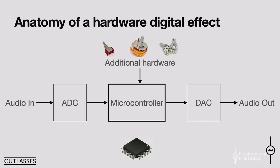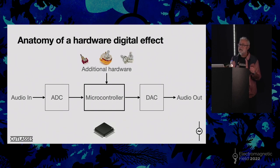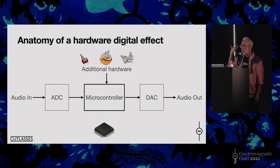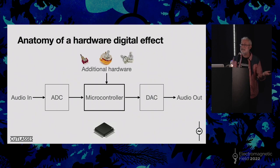Here's a really simple breakdown of what digital effects are doing. You've got some analog audio coming in to your ADC — your analog-to-digital converter — going into your microcontroller. There's some additional hardware the microcontroller will also read: switches, encoders, potentiometers, whatever it is that parameterises your effect. If you're doing Eurorack, you might also have CV coming in. Then we do our processing — reverb, delay, whatever — and then we spit it back out again as analog via the DAC. That's really what every hardware effect is doing.